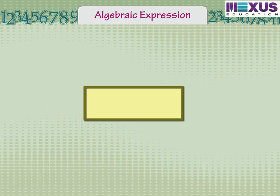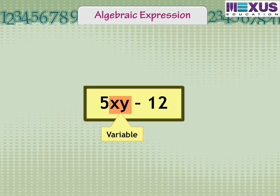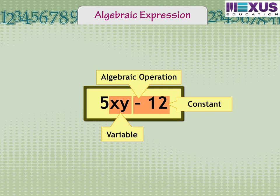For example, 5xy minus 12. Here xy is a variable, minus 12 is a constant, and the algebraic operation used is subtraction.